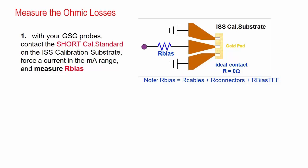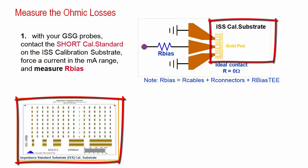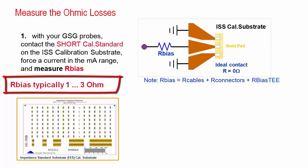I suggest to apply two steps. The first step covers the cable losses, the connectors and the bias tee. I connect the GSG probe to the golden contacts of the short on the ISS CAL substrate. This short will be applied later for the calibration of the network analyzer. Its gold contacts are considered as ideal and we measure the sum of all the other losses. The measured value is usually between 1 to 3 ohm.